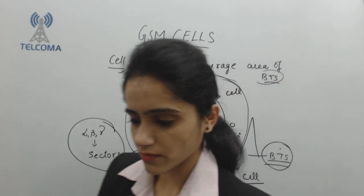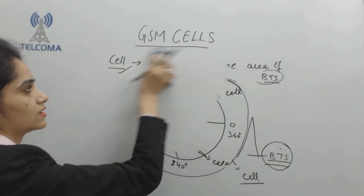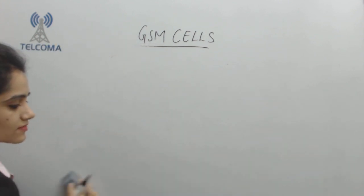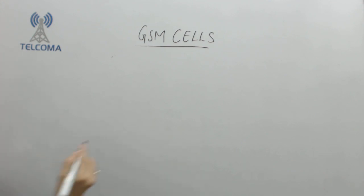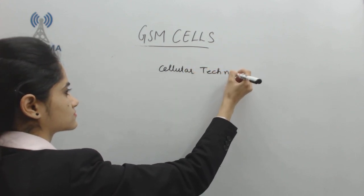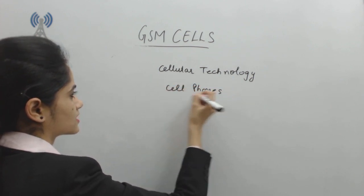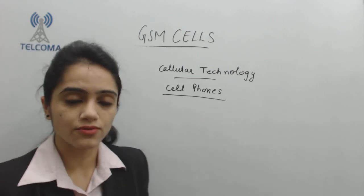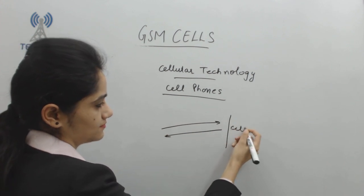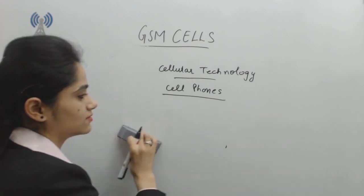This is why GSM is called a cellular technology — we have cellular structures, wireless cell systems, and cell phones. Everything is related to the cell. Cell phones are basically the phones that can access the cell, which is why we have the term cellular technology and cellular structure.